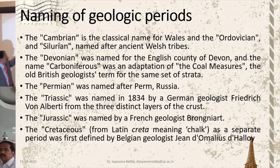The different names used in geological time scale were coined by different scientists. For example, the name Triassic was coined by the famous scientist Von Alberti. Jurassic, a very famous period, was coined by Brogniart.